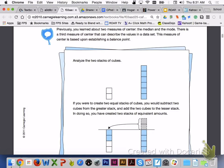Previously, you learned about two measures of center: the median and the mode. There is a third measure of center that can describe the values in a data set. This measure of center is based upon establishing a balance point. If you were to create two equal stacks of cubes, you would subtract two cubes from the greater stack and add the two cubes to the lesser stack. In doing so, you have created two stacks of equivalent amounts.